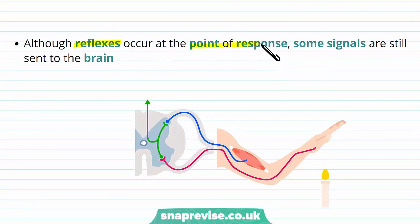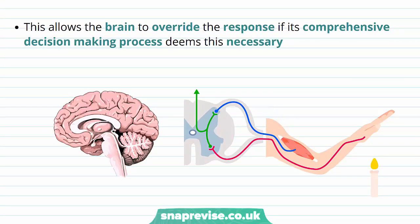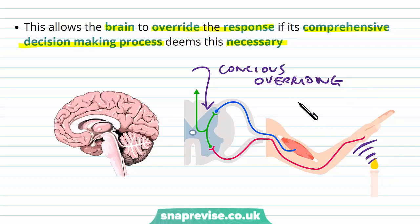Although the reflex occurs at the point of the response, some of the signals will still be sent to the brain. So the reflex will happen as normal — the arm moves away — but some signals do go to the brain as well. This might result in nothing, but sometimes it allows the brain consciously to override the response if it's a comprehensive decision-making process. For example, you may have spent all afternoon preparing a meal, and even though the plate is burning you, you may override this and tell your hands not to let go. Some reflexes like this can be overridden by conscious thought, though if the temperature were far too hot, it would probably result in you dropping the meal.